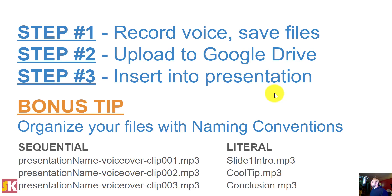Step 3 is to actually insert them into your slideshow. As a bonus tip: when saving your audio files, use a naming convention that makes sense for you. The sequential naming convention I like goes along the lines of 'presentation-name-voiceover-clip-001, clip-002, clip-003,' etc. This keeps things organized and easier to find in Google Drive. You could also use a literal naming convention — for example, 'slide-1-intro,' 'cool-tip,' or 'conclusion' — whatever works best for you.